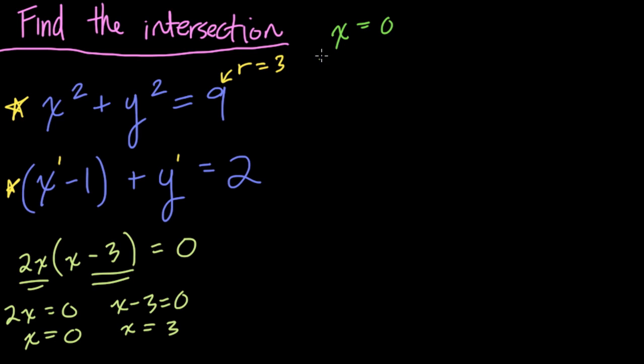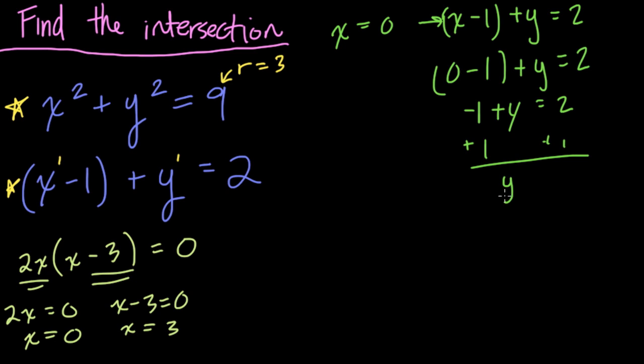If that's the case, we can plug it now into either equation. I'm going to use the linear equation and avoid the exponents. So, if x is equal to 0, and I'm plugging it into our linear equation, x minus 1 plus y equals 2, then we get what? Well, 0, x is 0, so 0 minus 1 plus y equals 2. 0 minus 1 is negative 1, plus y equals 2. We add 1 to both sides, and we get y equals 3. And that gives us our first point. In this point, x is equal to 0, and y is equal to 3. So, that's our first solution. That's where the circle and this line meet.